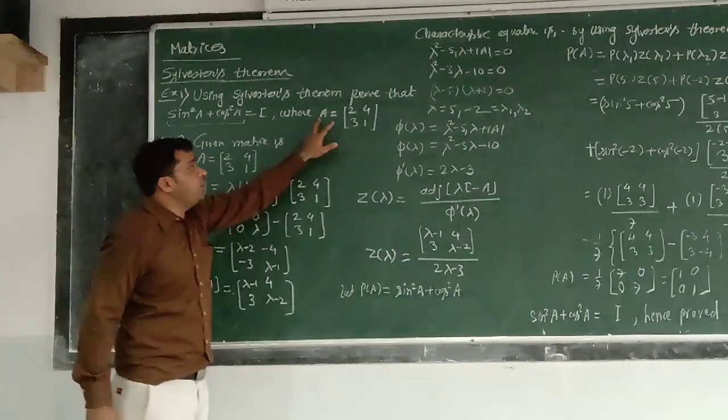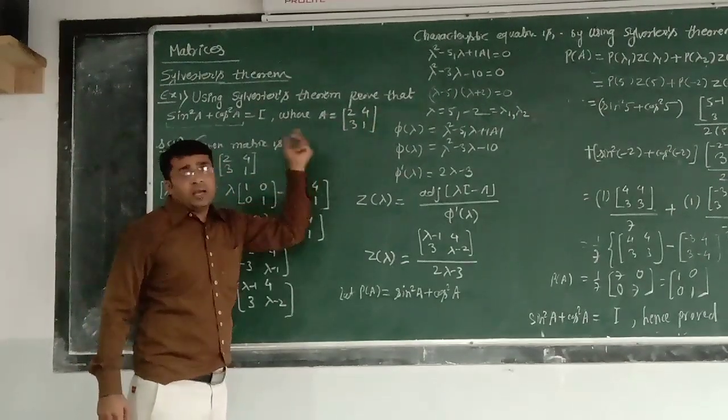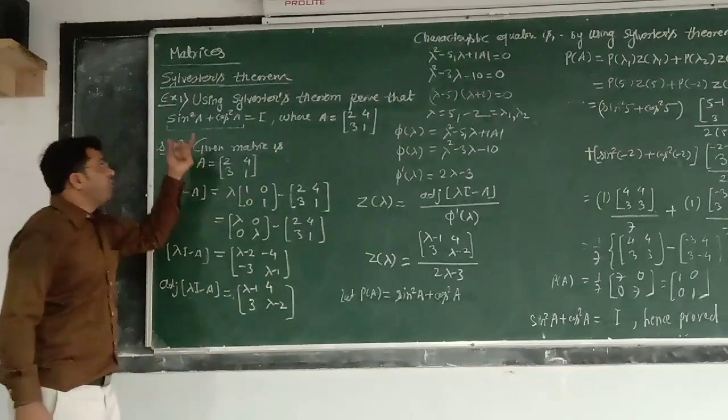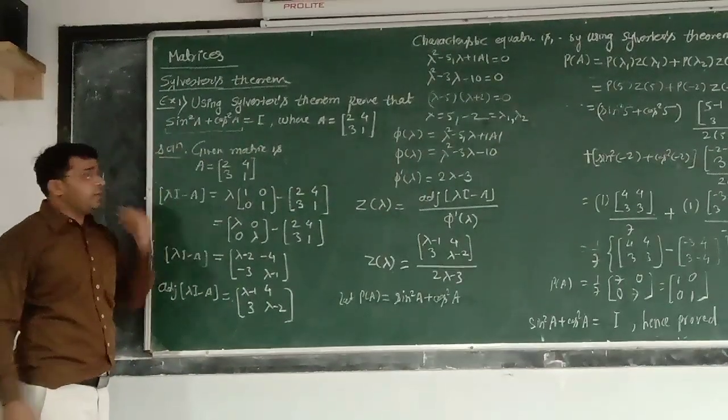This we have to prove by using Sylvester's theorem. And A is given to you, it is 2, 4, 3, 1. Now, A may be different for the different example, but this identity will be true for all A.